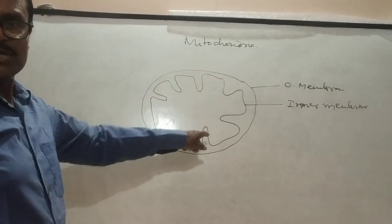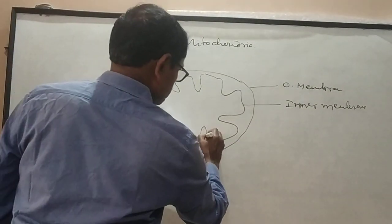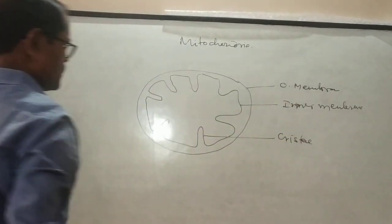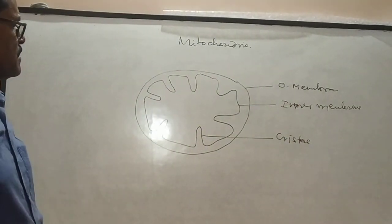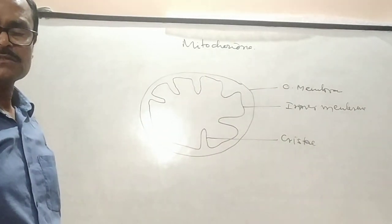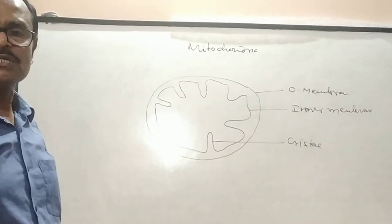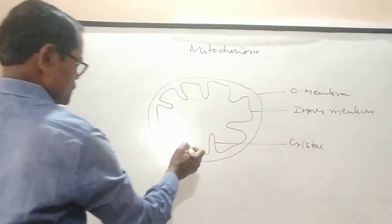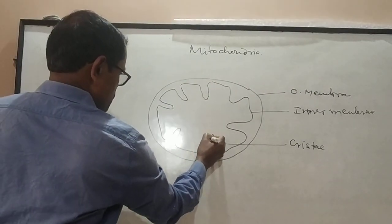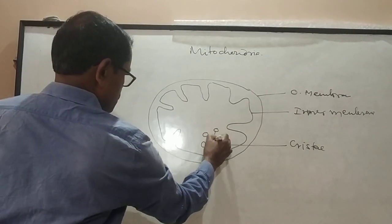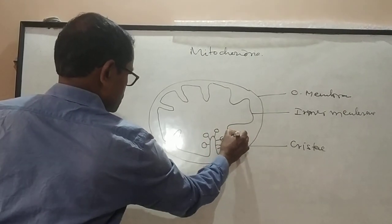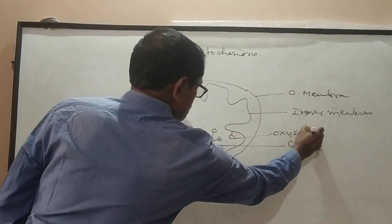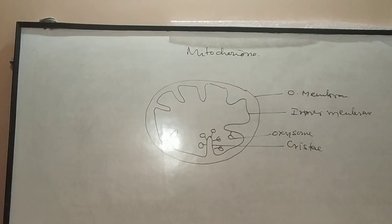The folding structures are known as cristae. The cristae contains some particles which are known as mitochondrial particles or oxysomes. These are known as oxysomes or mitochondrial particles.